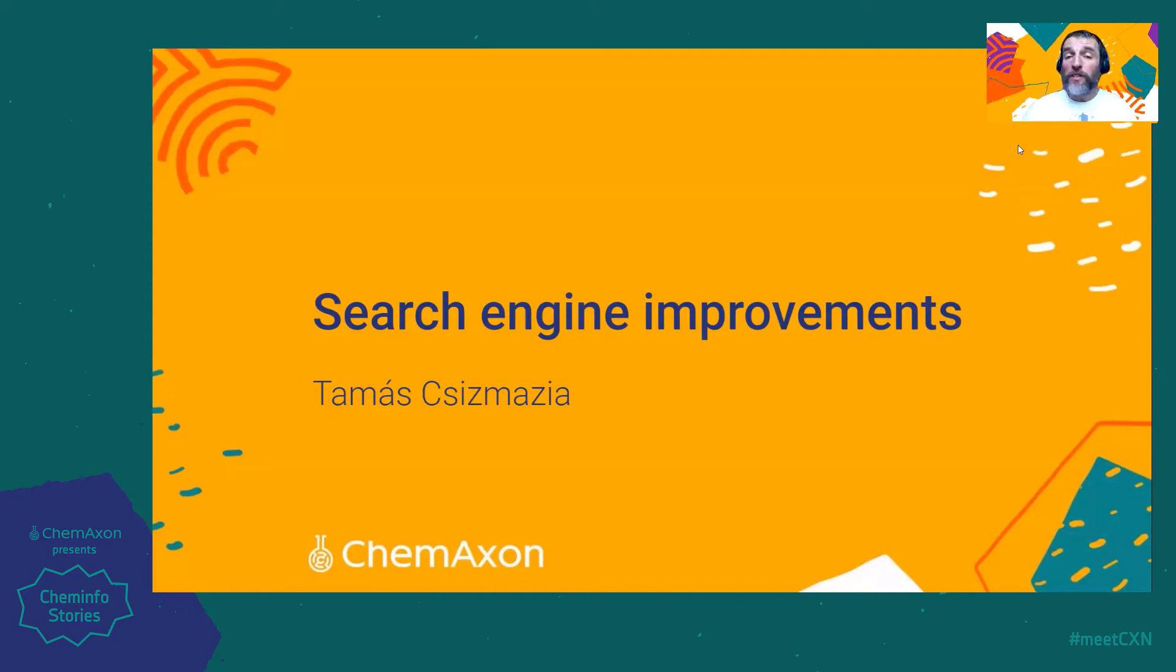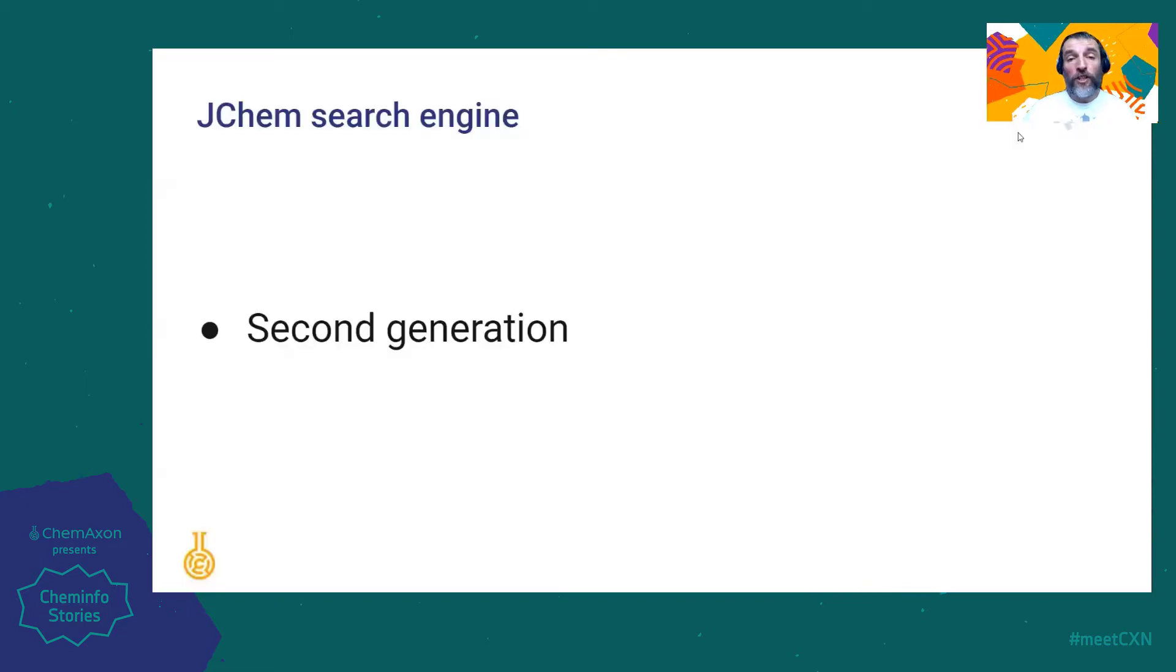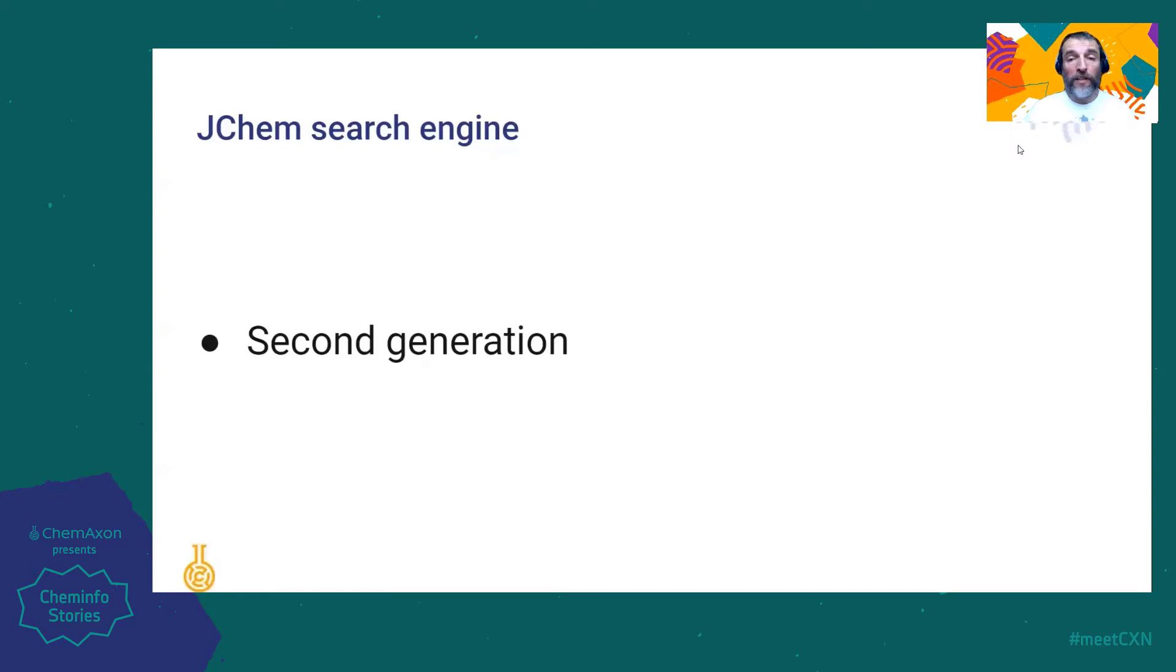Let's start with some history. The first generation of our search engines is the probably well-known JChemBase that provides a public Java API. Then we started to develop a second generation engine for our new products. It handles several workflows, datasets, so it's more complex than JChemBase. We call it the invisible heart of ChemAxon since it's built into our products only and has no public Java API.